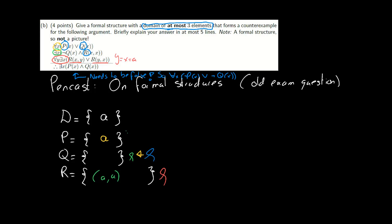So there you go. One example of a formal structure that makes all of the premises true and the conclusion false. You can make it more complicated by adding more elements to your domain and seeing how you can still make the premises true and the conclusion false. But for questions like this, I believe that adding more elements will only make your life harder.